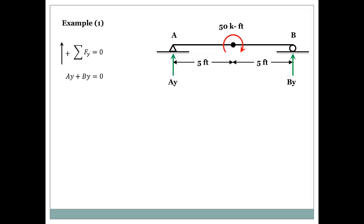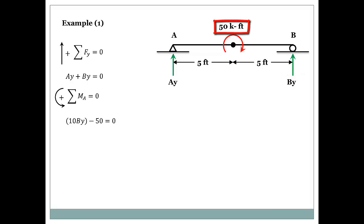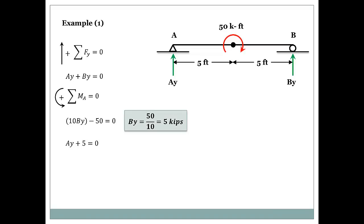Since there are no forces in the X direction, let's jump directly to the moment equation. Summing moments about point A, assuming counter-clockwise as positive, gives: 10 times By minus 50 (the concentrated moment at mid-span) equals zero. Solving for By gives five kips. Substituting back into the Ay plus By equation gives Ay equals minus five kips.